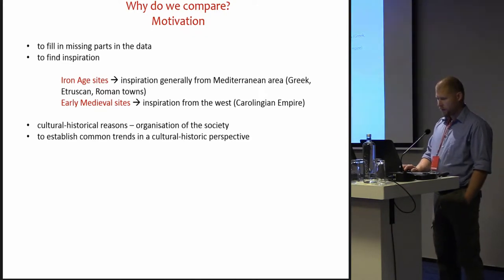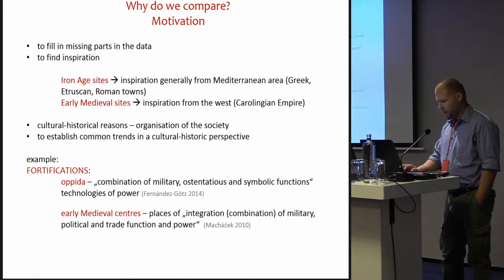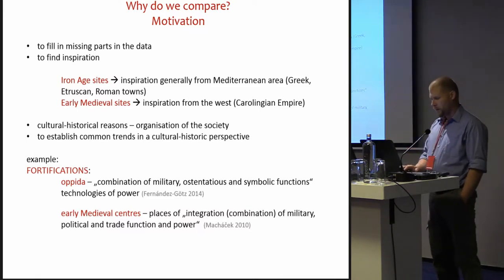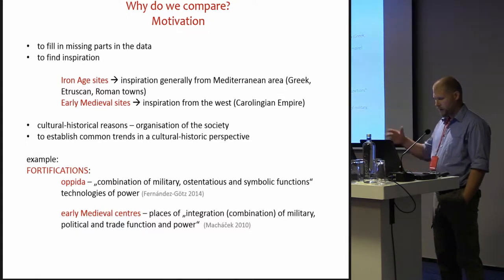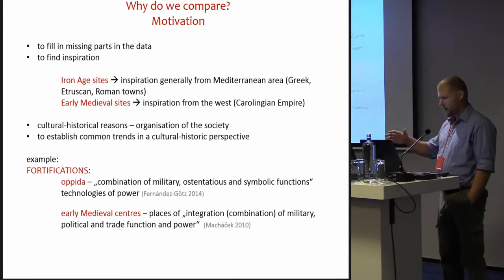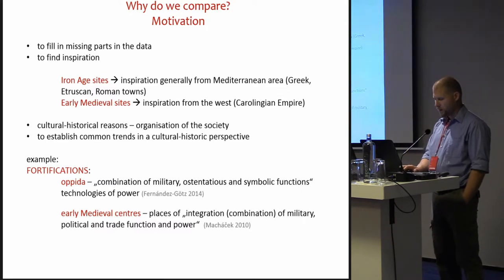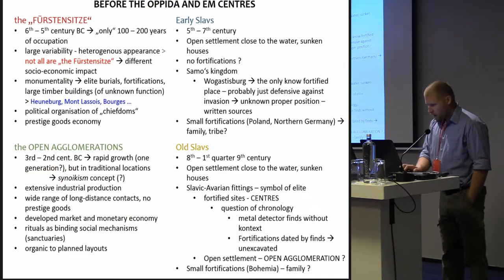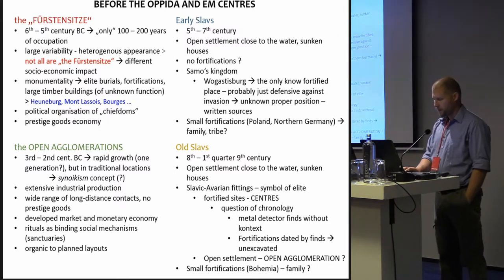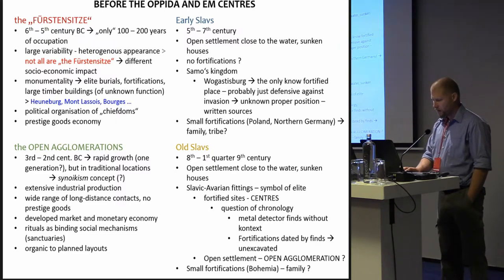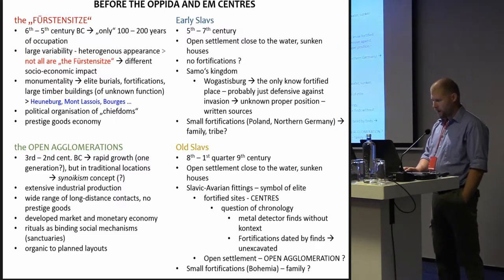Common trends include, for example, fortifications, OPIDA, or early medieval centers and agglomerations as presented in literature. To have a better view of the development, let's remind ourselves of the situation before the time when OPIDA or fortified early medieval centers emerge. We have much better information about the development and the ancestors in the Iron Age, thanks to a long tradition of research and comparable information.